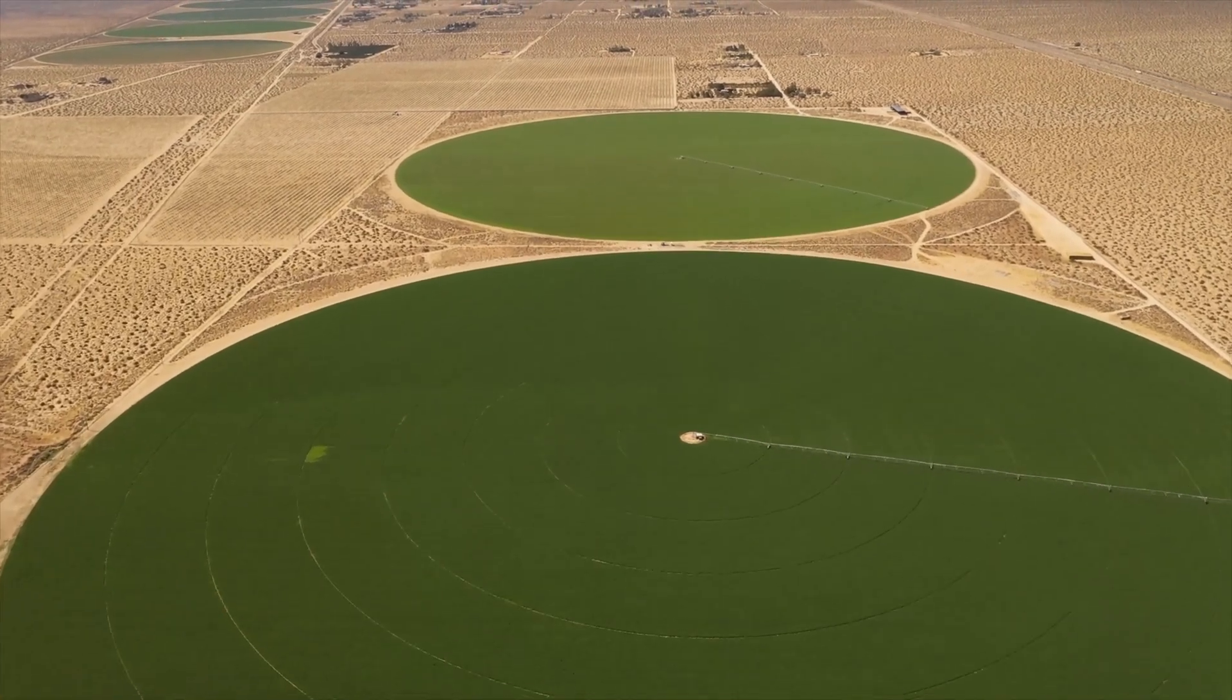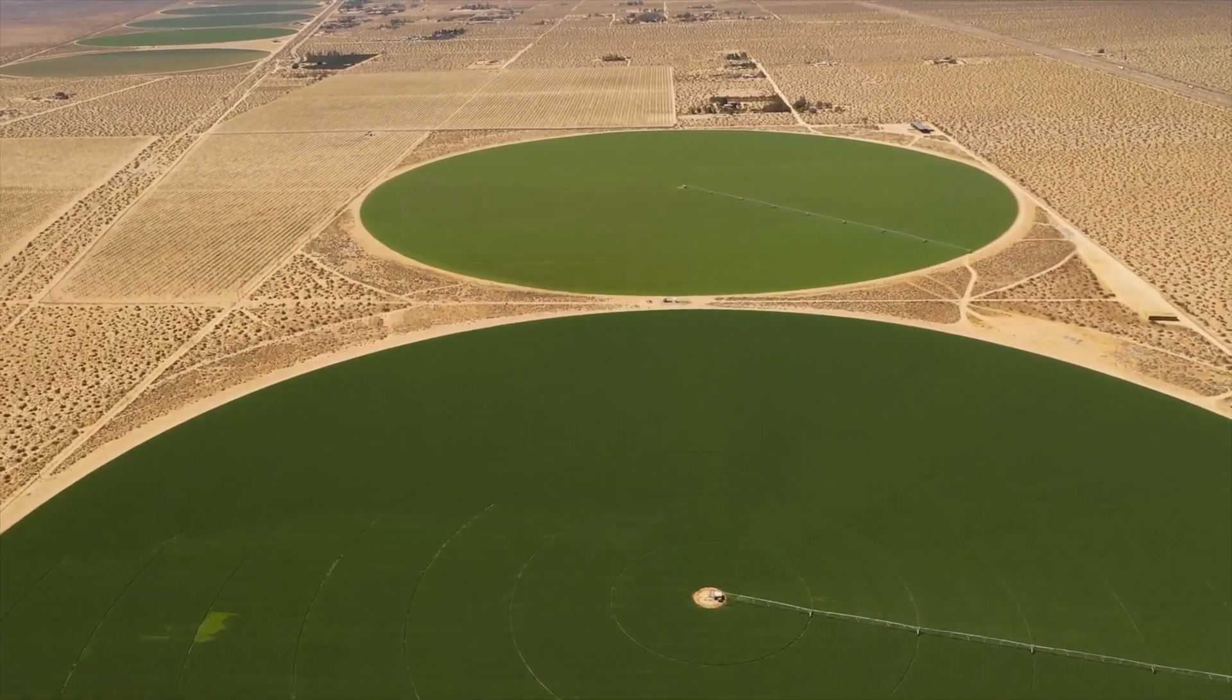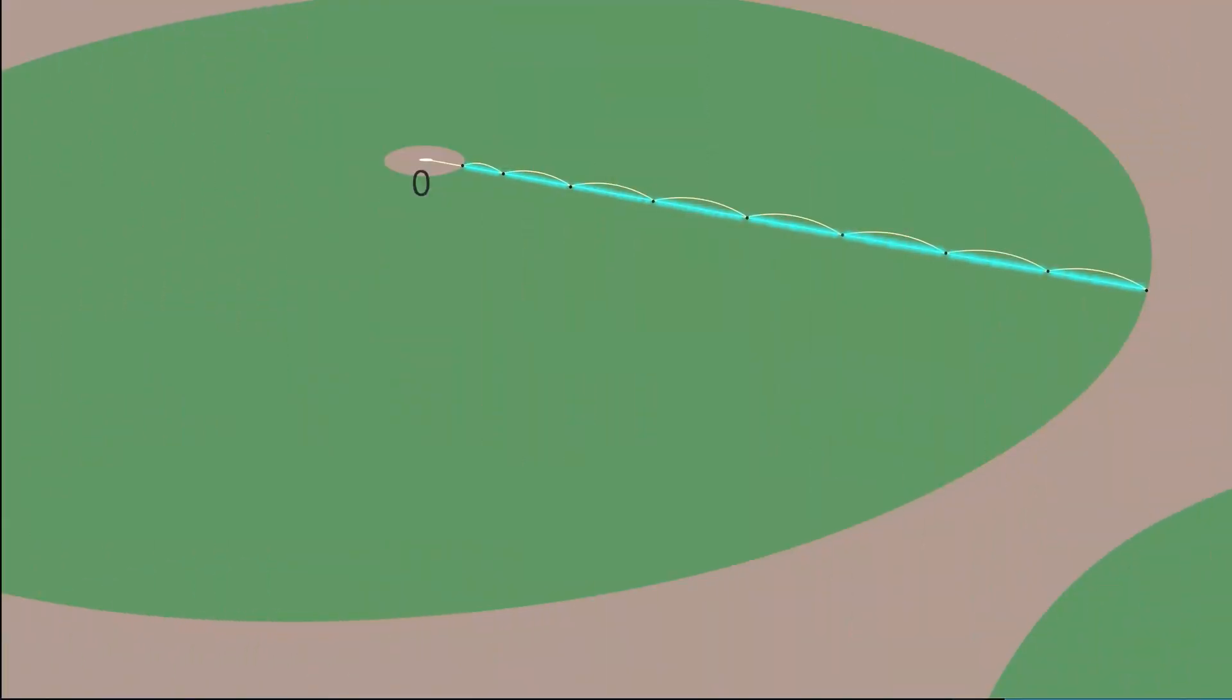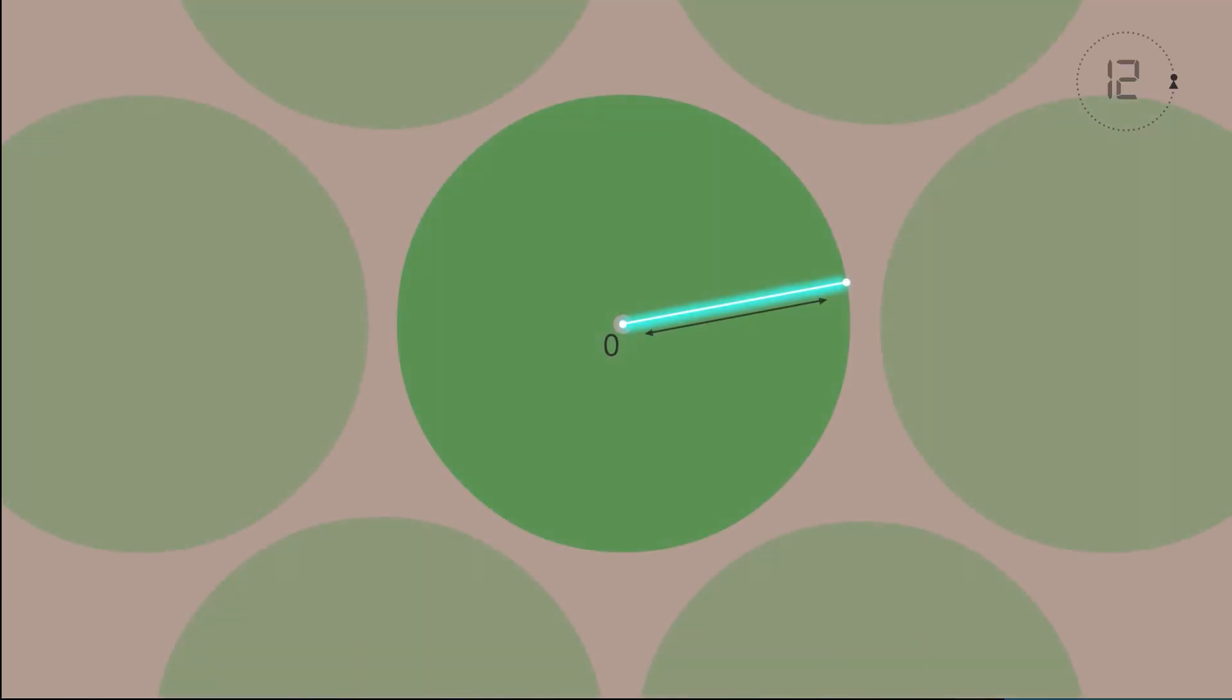Centre pivot irrigation is a method of crop irrigation that results in large, circular crops. The irrigation arm is fixed at the centre and slowly rotates about the pivot. In this problem, the irrigation arm has a length of 275 metres and it makes one complete rotation every 12 hours. After 4 hours, the end of the arm has moved from point X to point Y. How can we calculate the distance of point Y from the starting point X?